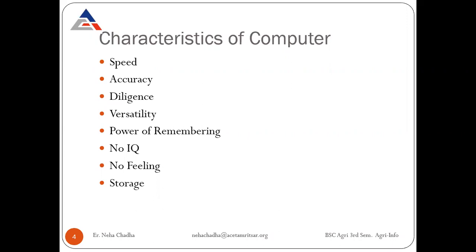There is no IQ — a computer is a dumb machine with no personal IQ. It cannot do any work without instructions from the user. Only when we use the computer does it work. It performs instructions at very high speed and accuracy, but it is the human who decides what to do and in what sequence. A computer cannot take its own decisions.